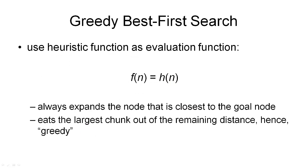The simplest best first search algorithm is probably greedy best first search. This algorithm simply uses the heuristic function defined for the problem as the evaluation function. The heuristic function is problem-specific and encodes the distance to the nearest goal node, whereas the evaluation function is used by the algorithm to determine which node to expand next. Greedy best first search equates the two, always expanding the node closest to the goal. It is called greedy because it always tries to take the largest chunk out of the remaining distance to the goal, trying to reach it in as few steps as possible — but since the number of steps isn't necessarily the cost of a path, this is not necessarily the optimal strategy.